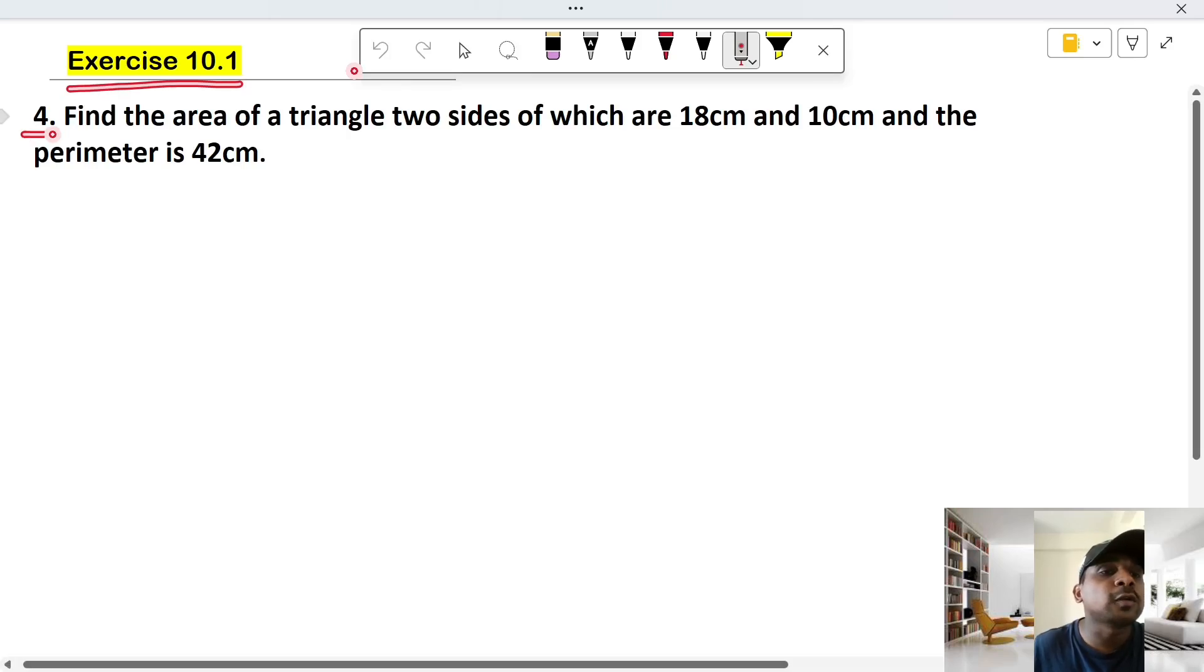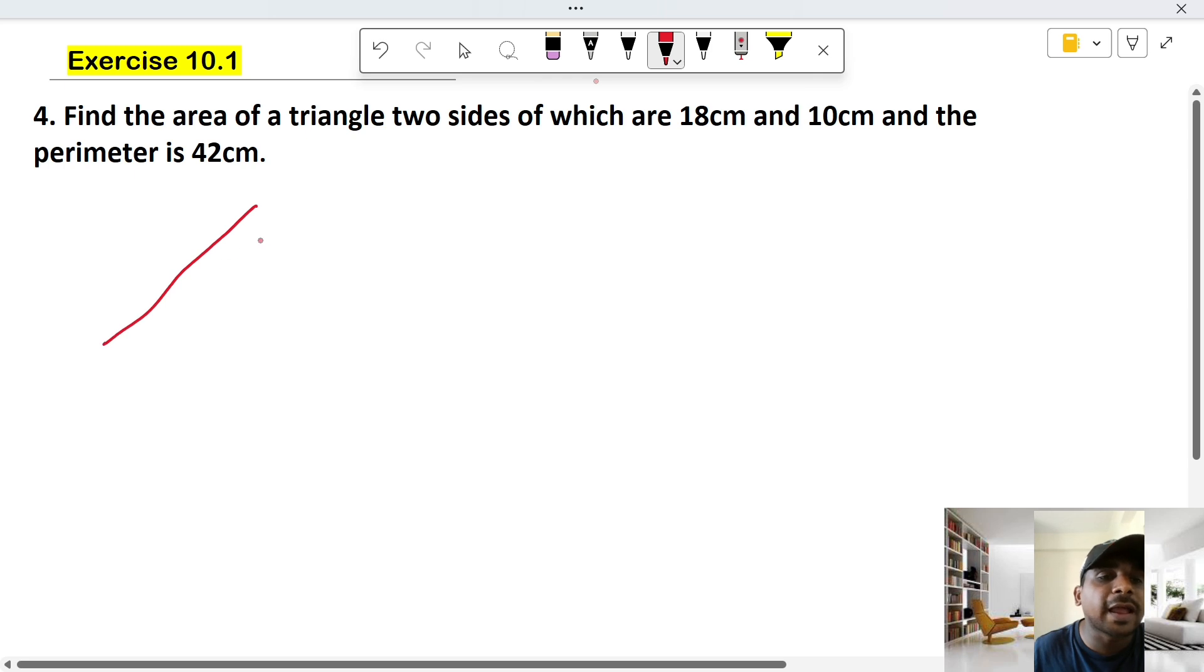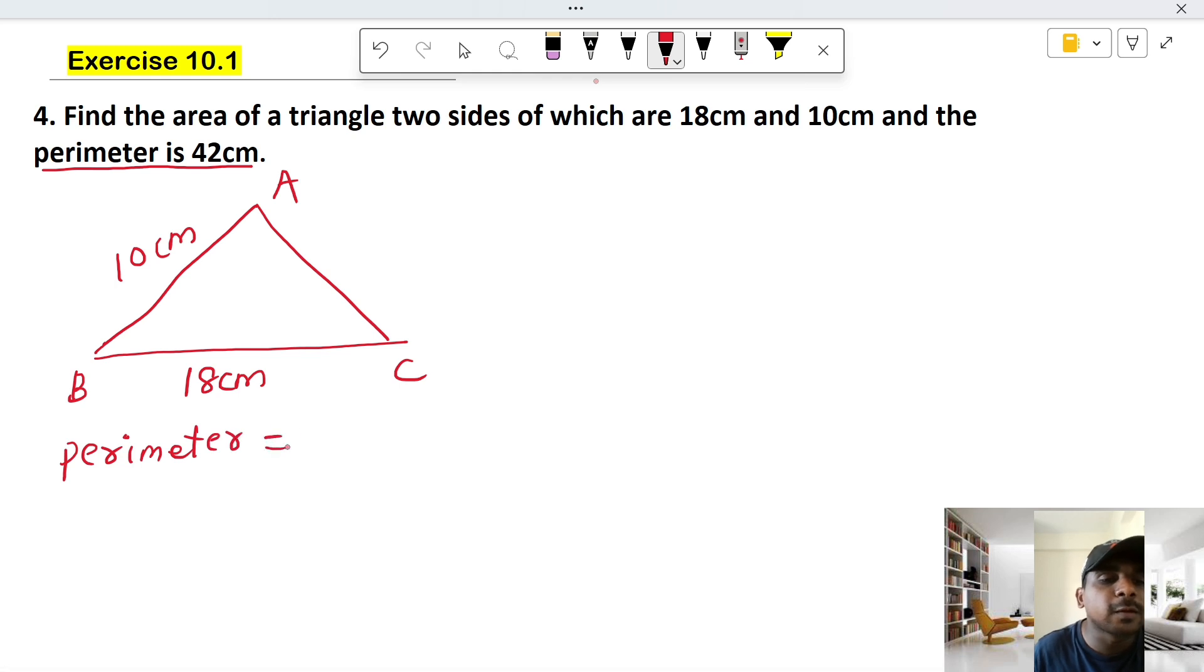Exercise 10.1, fourth question. Find the area of a triangle, two sides of which are 18 centimeters and 10 centimeters, and the perimeter is 42 centimeters.